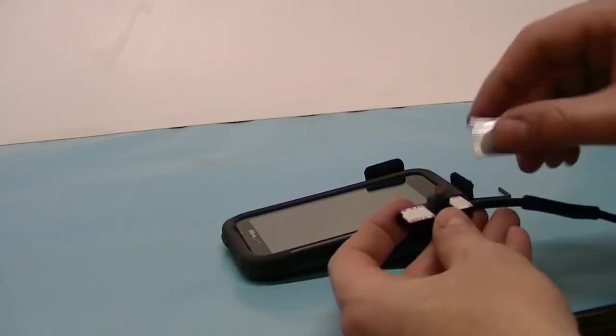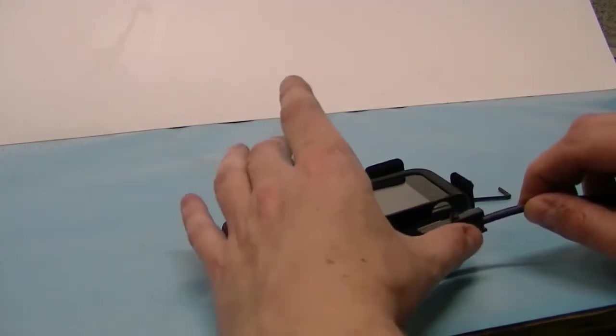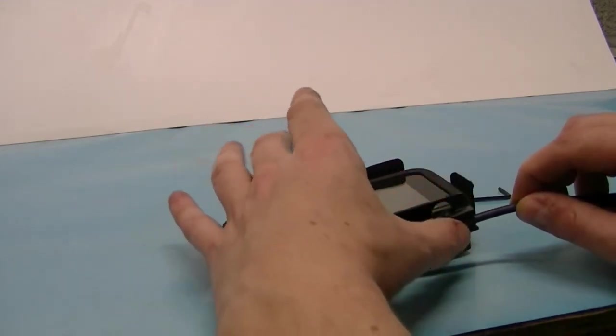Now go ahead and remove your liners from your tape. With the liners removed, now go ahead and insert it into your phone. Push on the cord, don't push on the block. You just want the cord to go in.